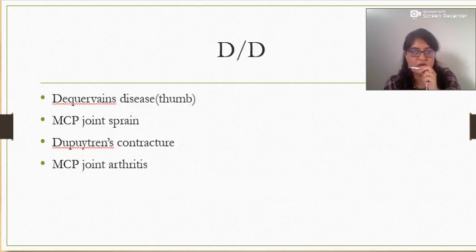Differential diagnosis: if it is the trigger thumb, then the differential diagnosis of Dequervain's disease can be considered. Otherwise, it is MCP joint sprain or MCP joint arthritis or Dupuytren's contracture.